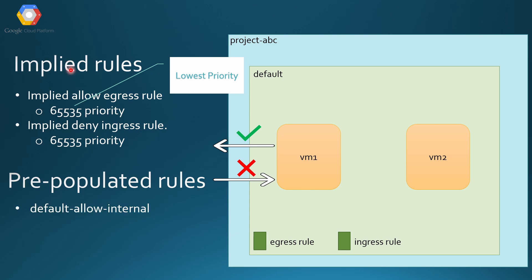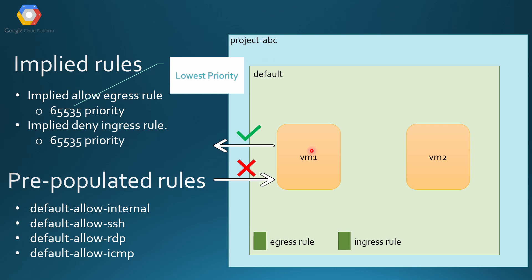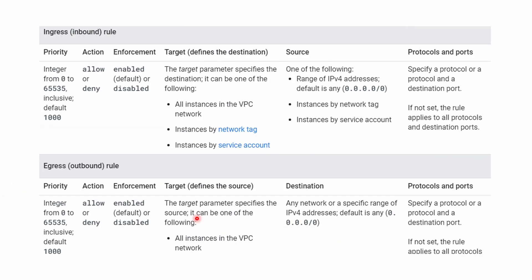Whenever you create a network you'll also have some pre-populated rules: default allow internal, meaning communication between VM1 and VM2 or any internal traffic is allowed; default allow SSH so you can SSH from VM1 to VM2 internally within the network; default allow RDP so you can connect to a database from a VM internally; and ICMP so you can ping the VMs. These are pre-populated rules you find in the default network or a network created with auto mode.